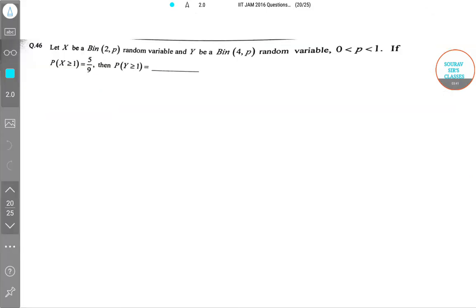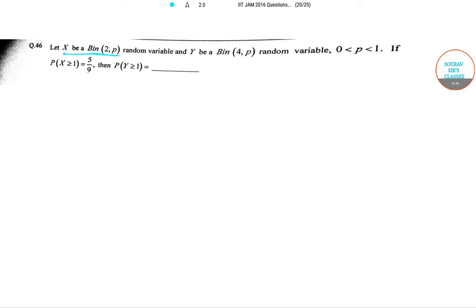The next question is: let x be a Binomial(2, p) variable and y be a Binomial(4, p) random variable, where p lies between 0 and 1. If P(x ≥ 1) = 5/9, then find P(y ≥ 1).